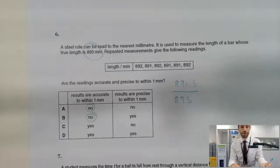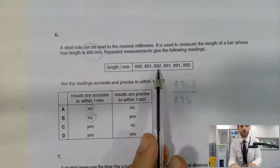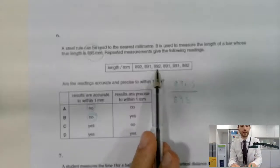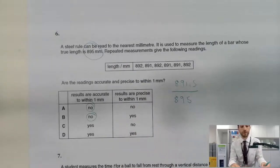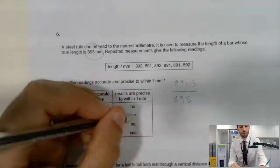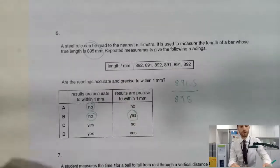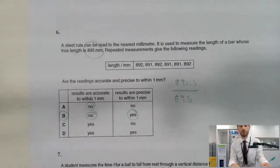Are they precise to within one millimetre? Well, if we look at the deviation, we've got half of the range. The range is 8.92 minus 8.91, 1 divided by 2, 0.5. So we have definitely got precision to within one millimetre and so therefore B.